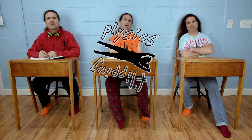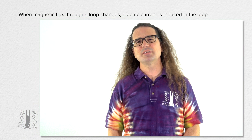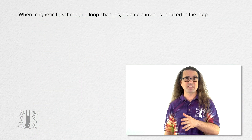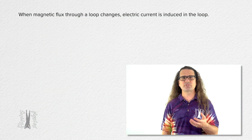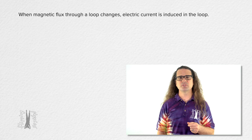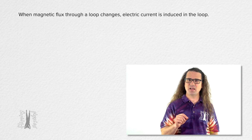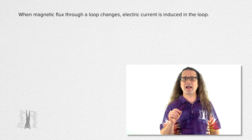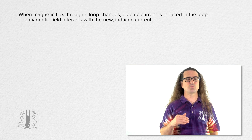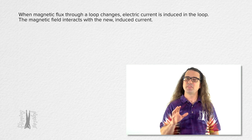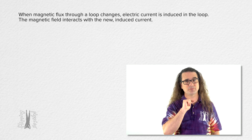Good morning. Up to this point, we have discussed how, when magnetic flux through a loop changes, electric current is induced in the loop. What we haven't yet discussed is how the magnetic field then interacts with the new induced current. That is what we are about to learn about.